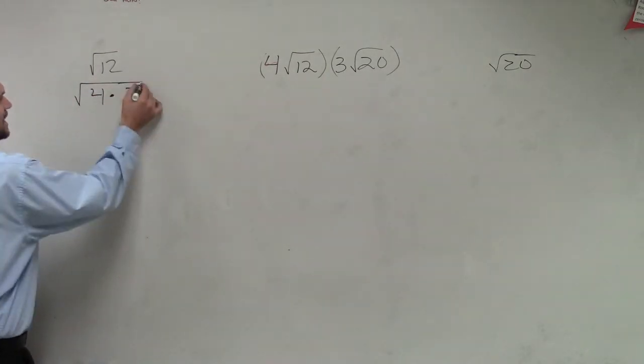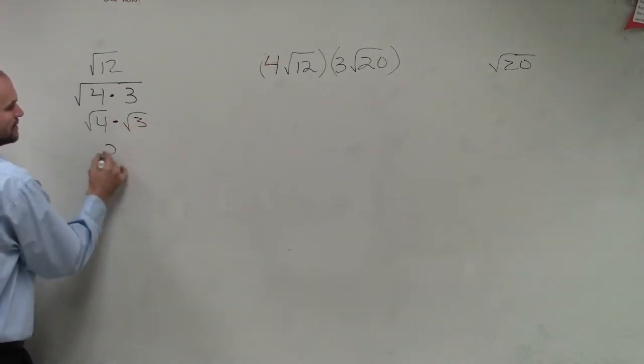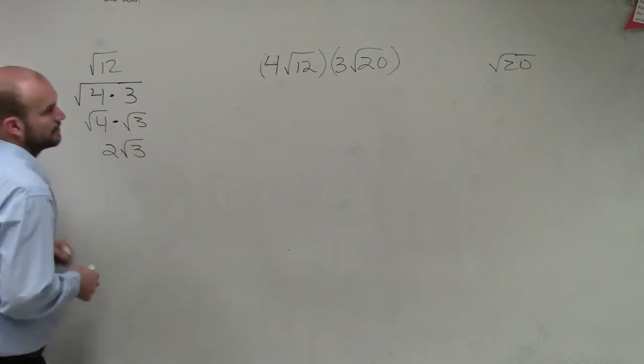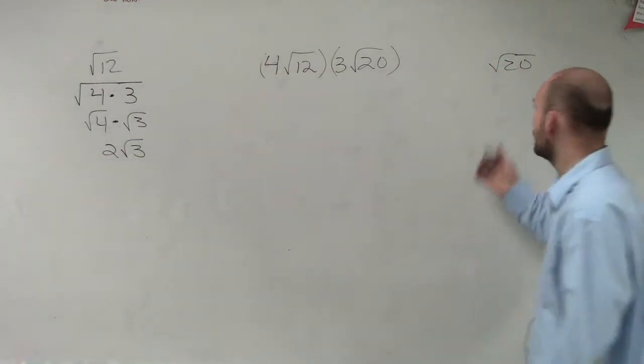Which then can be broken down into the square root of 4 times the square root of 3. The square root of 4 is 2. Right? What about 20? Can we break that down into a square number? 5 and 4, very good.